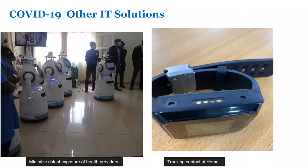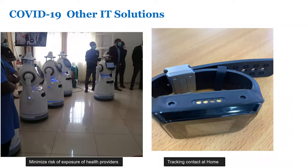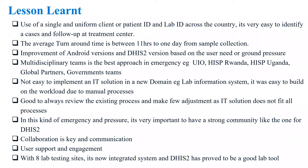Beyond COVID, the government also invested in other IT solutions, including a robot to minimize risks to health providers. There were also bracelets placed on patients to promote home-based care — they monitor patients at home and send SMS alerts if there is a problem. Currently most patients are treated at home with these bracelets, with only two to four treatment centers remaining active.